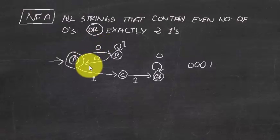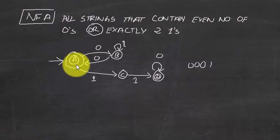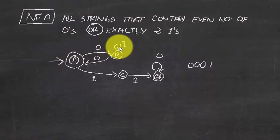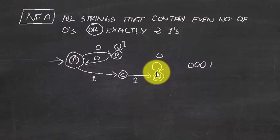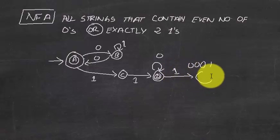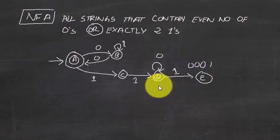The string is accepted when we have an even number of zeros — so zero-zero is accepted, but just zero alone is not. Four zeros is also accepted. When there are exactly two ones, we accept it too — so 'one one' is accepted. If there is a third one, it goes to a dead state where it's not accepted.